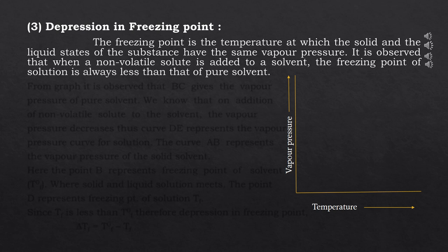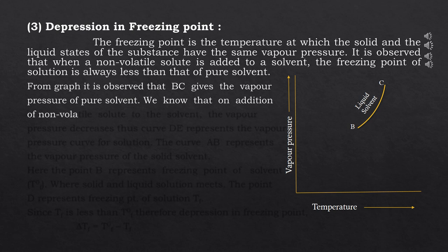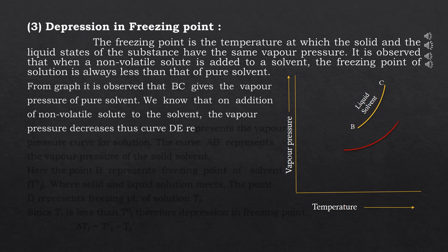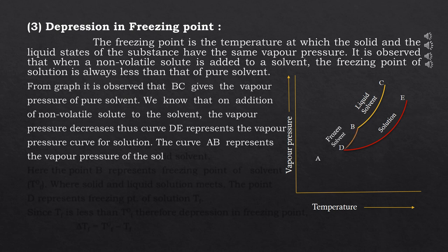We take vapor pressure along the vertical axis and temperature along the horizontal axis. The first two lines we draw are the same as in the graph for elevation in boiling point. From the graph, the yellow curve BC gives the vapor pressure of the pure solvent. On addition of a non-volatile solute, vapor pressure decreases, so the vapor pressure curve for the solution is the red curve DE.